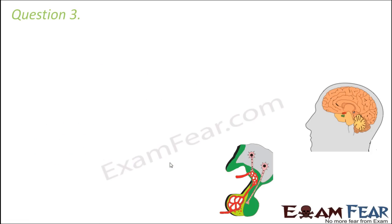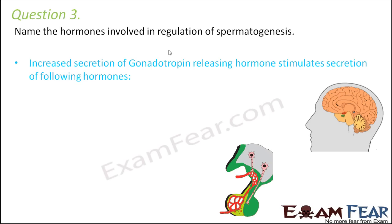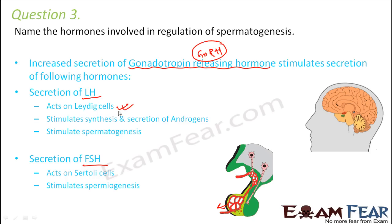Question three: name the hormones involved in regulation of spermatogenesis. The main control is with the hypothalamus, which releases gonadotropin releasing hormone — GnRH. This stimulates the anterior pituitary to release LH and FSH. LH acts on the Leydig cells, which are interstitial cells that synthesize and secrete androgens. Androgens control male sexual characters and stimulate spermatogenesis.